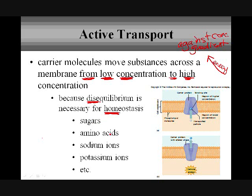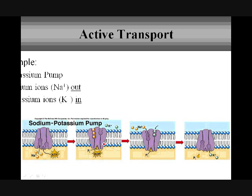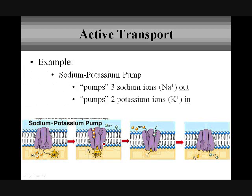For example, sugars, amino acids, sodium ions, potassium ions, and such. A perfect example of active transport is the sodium-potassium pump. Pumps are a protein embedded in the cell membrane, and that protein is going to pump molecules against the concentration gradient. It moves them in a 3-to-2 ratio.